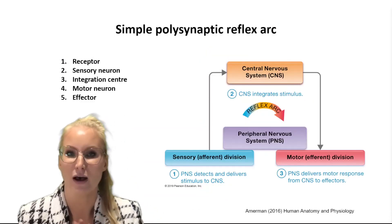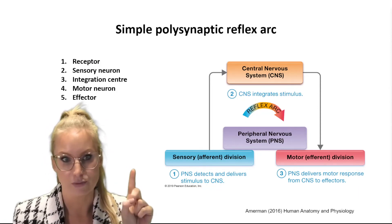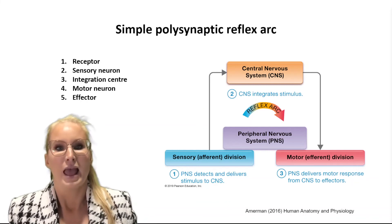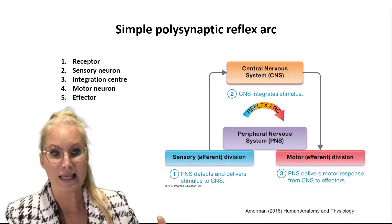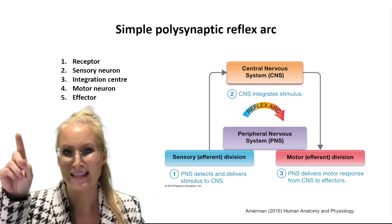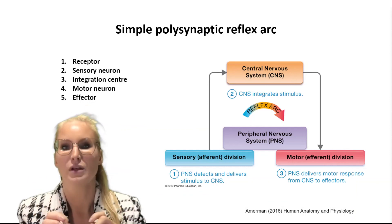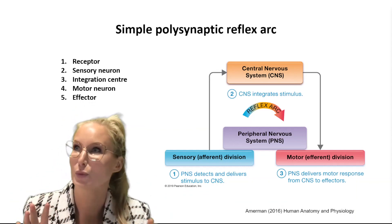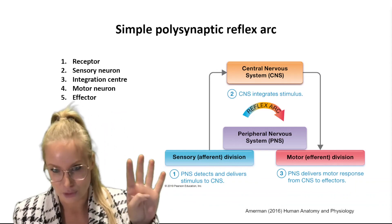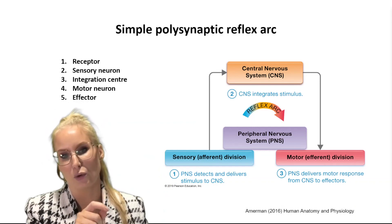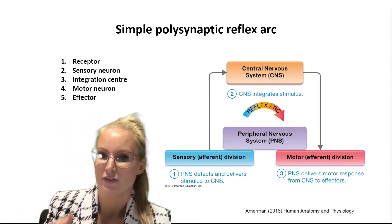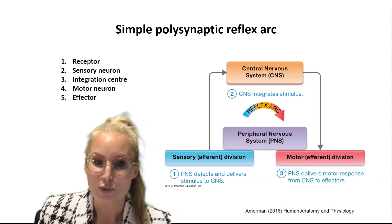Let's do a quick recap of the five parts of the simple reflex arc. First, the receptor detects the stimulus and converts it to electrical energy — in this case, nociceptors. Second, those nociceptors trigger the sensory neuron to send a signal to the spinal cord. Third, in the spinal cord we find the integration center, a collection of interneurons that decides what to do with the information. Fourth, it sends a signal to the lower motor neuron — the efferent pathway — out of the spinal cord. Fifth, the signal reaches the effector, the muscle in the leg, causing it to contract. This has been an overview of a simple polysynaptic reflex.